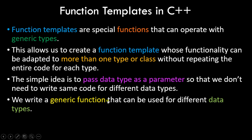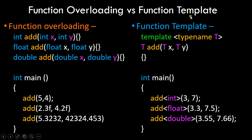Coming back to function templates — we write a generic function that can be used for different data types. Comparing function overloading versus function template: on the left we have function overloading in orange, and in blue we have function templates. In function overloading you have to write three different functions with the same name if you're passing different data types — one add function with integer variables, one with float, one with double. Depending on the type of variables passed, the appropriate function is called. But you have to write the function three different times.